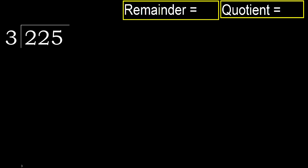225 divided by 3. 2 is less, therefore next. 22 is not less, therefore, we work with 22.